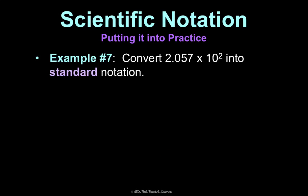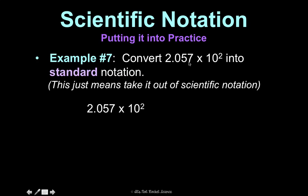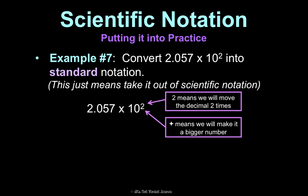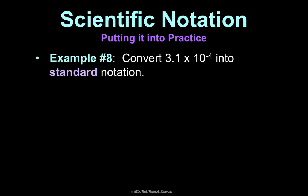Now, the only other way you would see this is we can go the other direction. So, we can go to standard notation, which would be to take it out of scientific notation and just make it a normal number. So, this is honestly even easier. When I'm looking at this, all I need to do is look right here. This is just going to tell you how many times you need to move the decimal. So, I'm going to move the decimal twice. Now, because it's positive, I'm going to make this a bigger number. So, I'm going to move the decimal this way to make it bigger. 2 means I'm going to move the decimal twice. Positive means I'm going to make it bigger. So, I'm going to move it 1, 2 times. And then, I just rewrite it, 205.7.